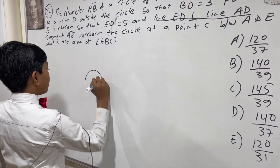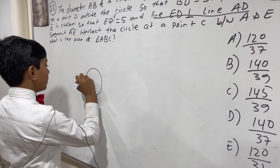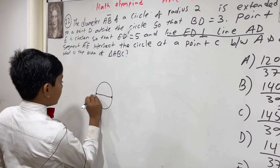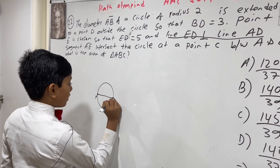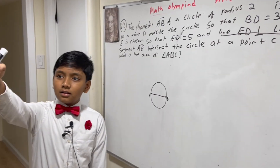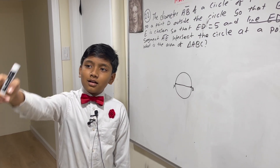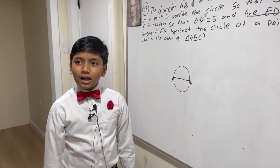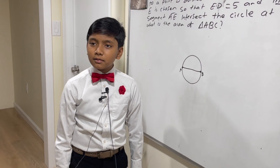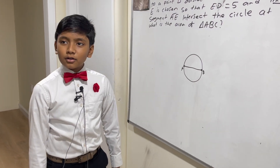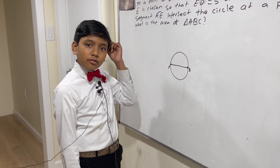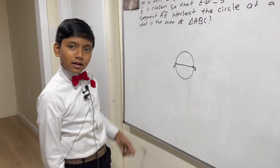Here is our circle, and here is its diameter AB. What is the difference between circle and triangle? Isn't this an AMC problem? Are you in the wrong classroom? K-12 schools get mixed up all the time.